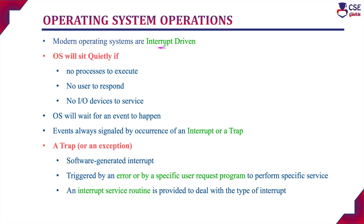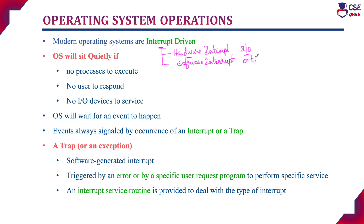There are two types of interrupts. One is hardware interrupt and another one is software interrupt. The hardware interrupt will be raised by any I/O devices — input-output devices will raise an interrupt signal. The software interrupt, if you are considering, is otherwise called a trap. Through the software code itself, it will raise an interrupt signal. That is called software interrupt.